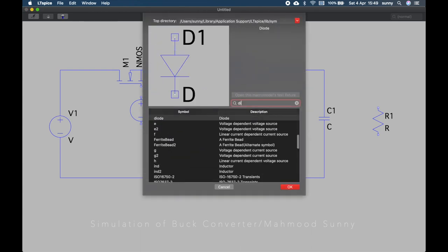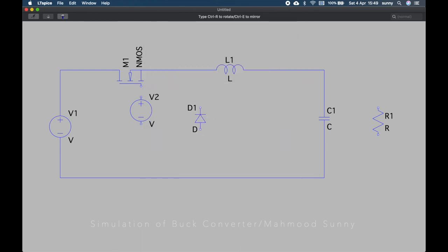We need to rotate the diode. The shortcut for ground is G.